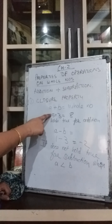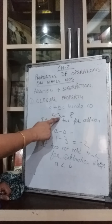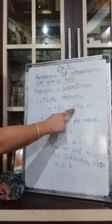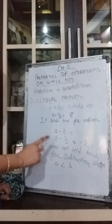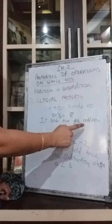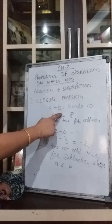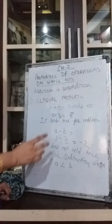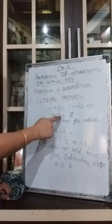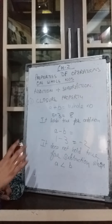For example, 5 plus 3 — 5 is a whole number, 3 is a whole number, and we get 8, which is also a whole number. So this holds true for addition. You can take any other example: 1 plus 2 gives 3, which is also a whole number. 17 plus 5 gives 22, which is also a whole number.